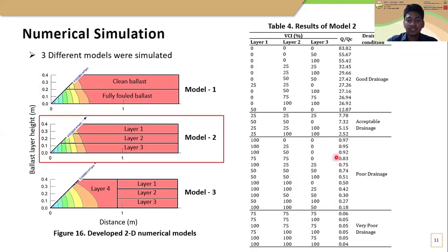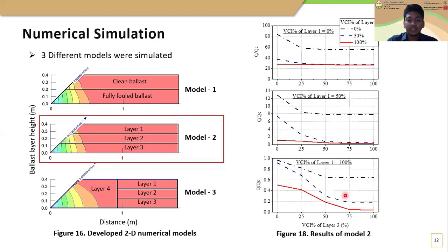This table summarizes the results of model 2. According to that, clean ballast provides good drainage while completely fouled ballast provides very poor drainage. Also, a significant reduction in track drainage can be observed when the fouling level of the top ballast layer increases. Also, relatively higher fouling levels in the top two layers result in poor drainage condition even though the bottom ballast layer is fairly clean. From this figure also, you can see that when the fouling level of the top ballast layer increases, the track drainage dramatically reduces regardless of the fouling levels in bottom layers.